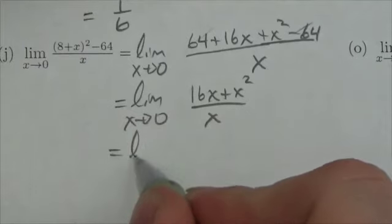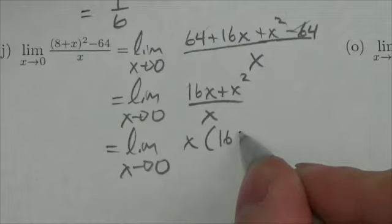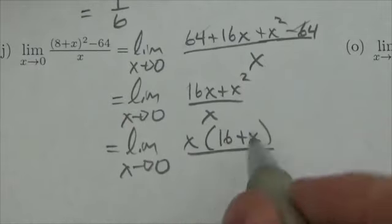In the numerator, there is a common factor of x that I can take out, so that will be x times 16 plus x, all over x.